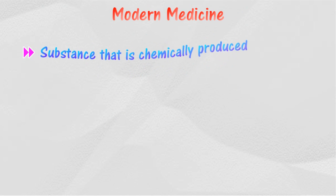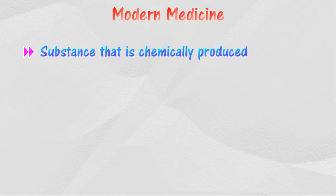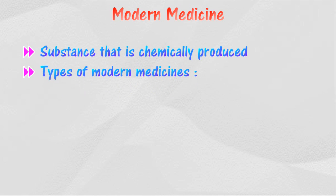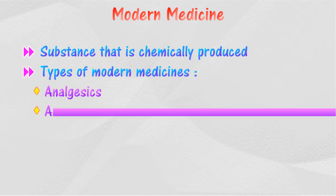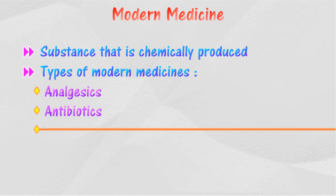Modern medicines are made based on substances found in nature. The active ingredients are extracted and purified chemically. These medicines are used to treat certain diseases. There are many types of modern medicines, including analgesics, antibiotics, and psychotherapeutic medicines.